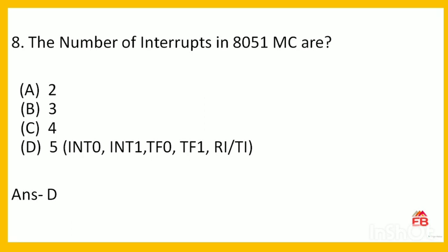Next: the number of interrupts in the 8051 microcontroller. Options are 2, 3, 4, or 5. The correct answer is option D — 5 interrupts. The five interrupts are INT0, INT1, TF0, TF1, and RI/TI.